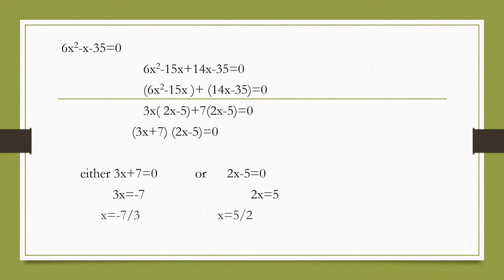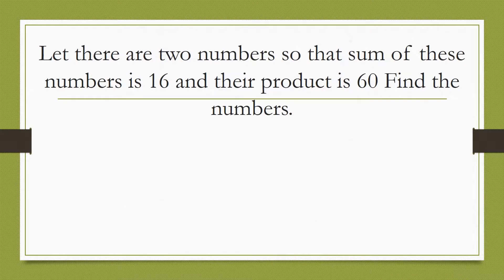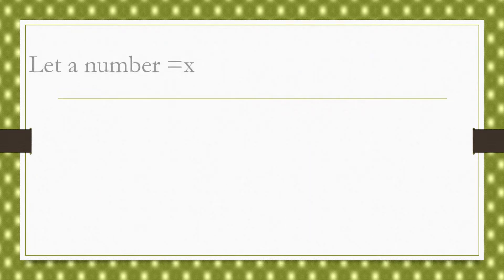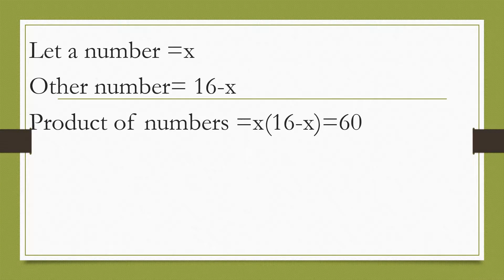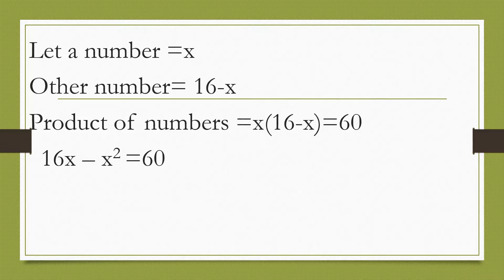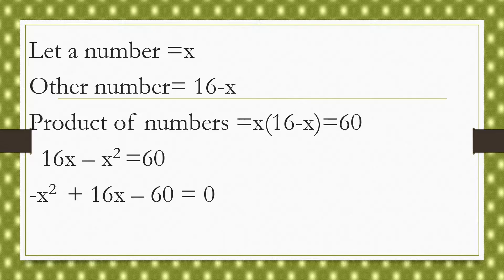Now let's solve a word problem using the factorization method. There are 2 numbers such that their sum is 16 and their product is 60. Let one number be x, so the other number is 16 minus x. The product gives x into 16 minus x equals 60, or 16x minus x square equals 60, which simplifies to x square minus 16x plus 60 equals 0.